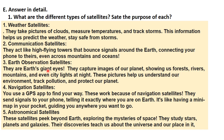Earth observation satellites are Earth's giant eyes — they capture images of our planet showing us forests, rivers, mountains, and even city lights at night. These pictures help us understand our environment, track pollution, and protect our planet. Navigation satellites — we use GPS apps to find our way. These work because navigation satellites send signals to your phone telling it exactly where you are on Earth. It's like having a mini map in your pocket, guiding you anywhere you want to go.